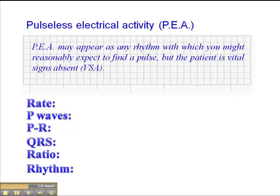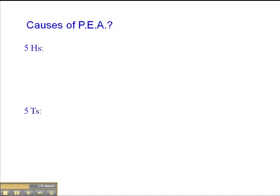The key with pulseless electrical activity is to do the standard CPR, but we want to look for an underlying cause and treat it. The Advanced Cardiac Life Support course lists five H's and five T's. Let me just go through these.